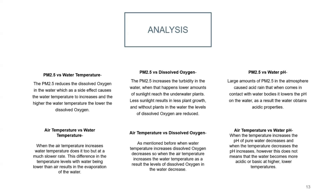Looking at PM2.5 and water pH: large amounts of PM2.5 in the atmosphere can cause acid rain. When that acid rain comes in contact with the water, it lowers the pH of the water, and as a result, the water obtains acidic properties. Regarding air temperature versus dissolved oxygen: as mentioned before, when water temperature increases, dissolved oxygen decreases. So when the air temperature increases, the water temperature rises and the levels of dissolved oxygen in the water decrease.